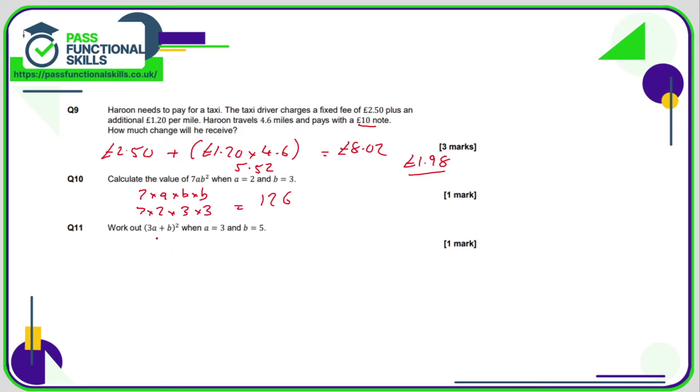Question 11 is slightly different because we are squaring 3a plus b. So first of all let's work out 3a plus b—that means 3 times 3 plus 5. Three times 3 is 9, 9 plus 5 is 14. So we've now got 14 squared, which means 14 times 14, and 14 times 14 is 196.